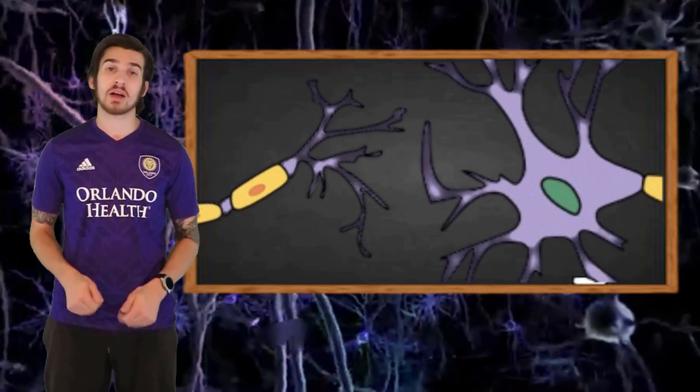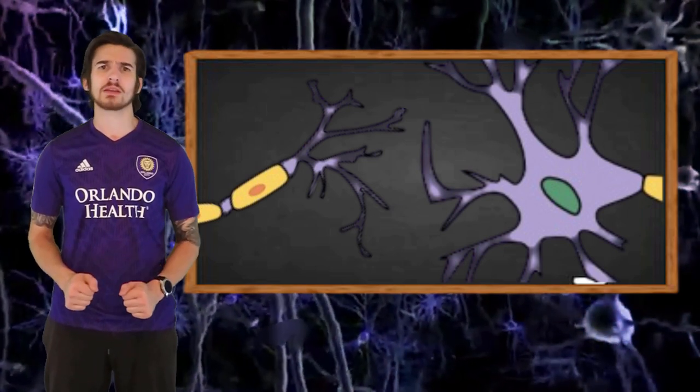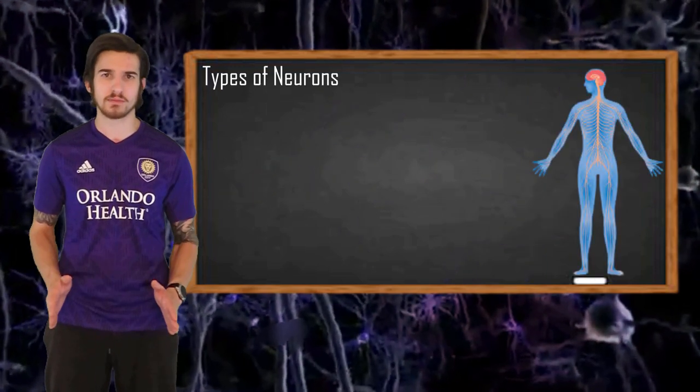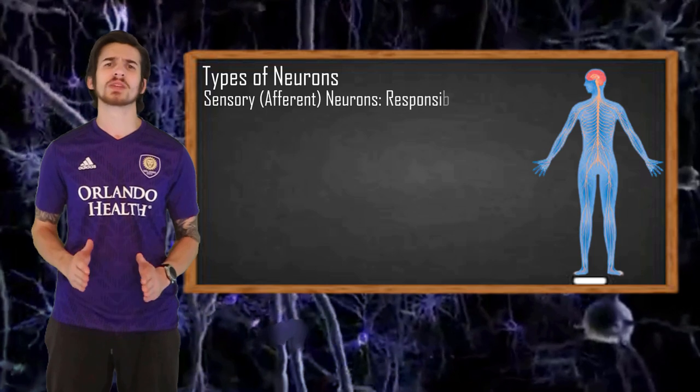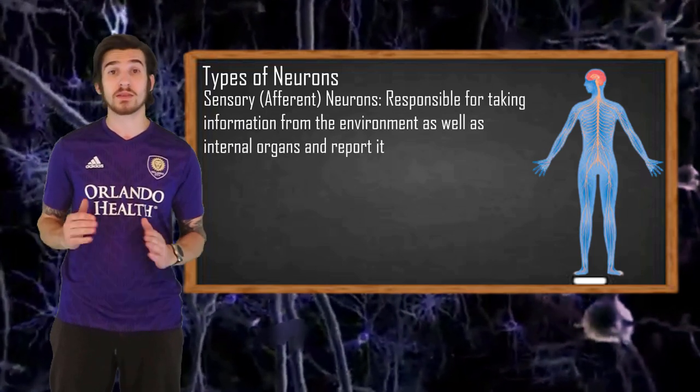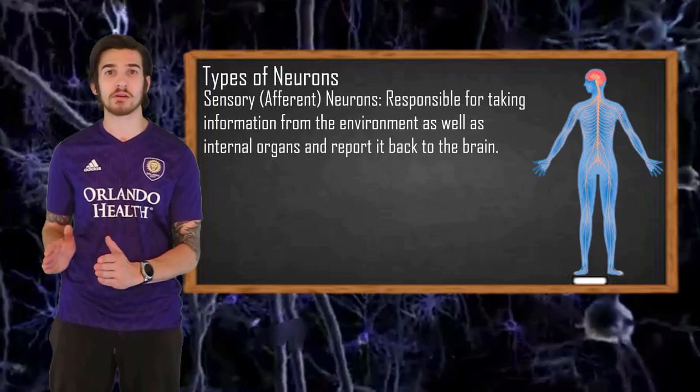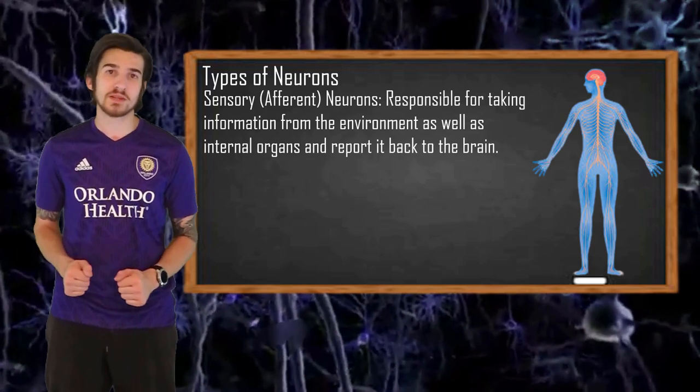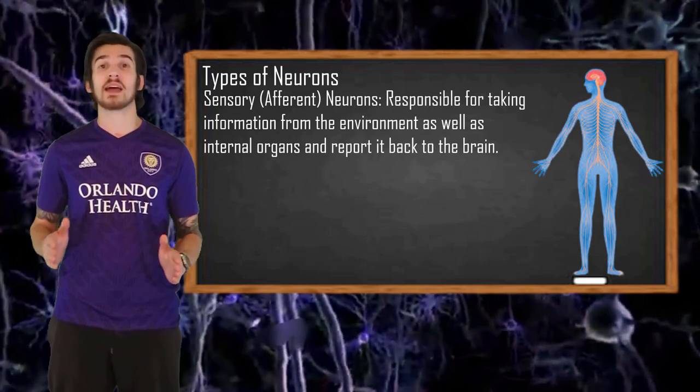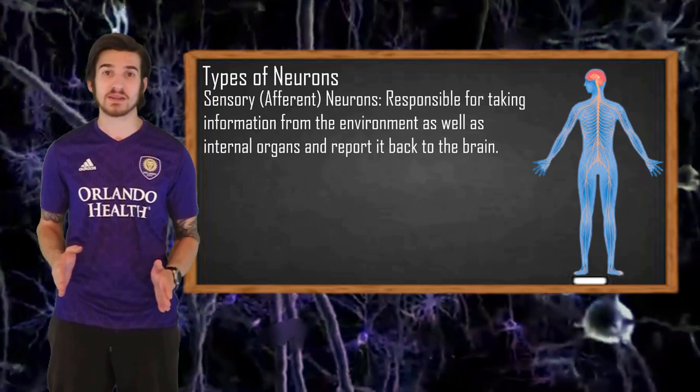Now before I leave you, I do want to talk a little bit about the different types of neurons in the human body. Neurons are going to be located all throughout the nervous system, not just the brain. Afferent or sensory neurons are responsible for taking information from the environment and reporting it back to the brain. This environmental stimuli can be either light for vision or sound for hearing. Sensory neurons also take information from the skin and internal organs and report that back to the brain. This is how we are able to process somatic sensations.